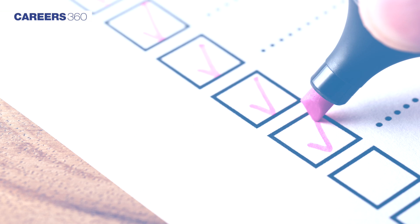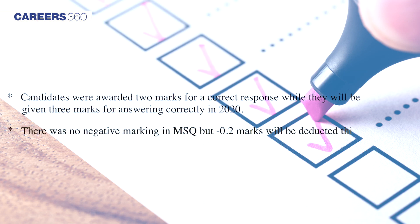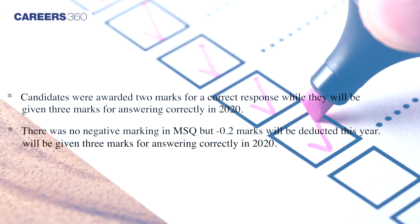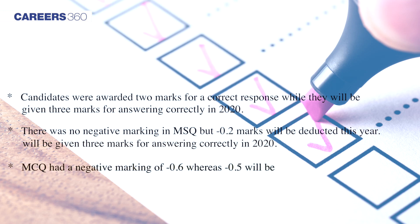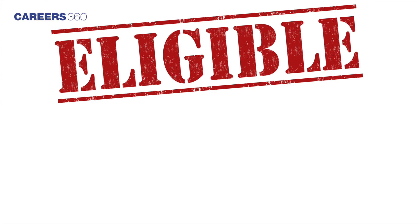The marking scheme has also changed. Candidates were awarded two marks for a correct response, while they will be given three marks for answering correctly in 2020. There was no negative marking in MSQ, but minus 0.2 marks will be deducted this year. MCQ had a negative marking of minus 0.6, whereas minus 0.5 will be deducted for answering incorrectly in 2020.